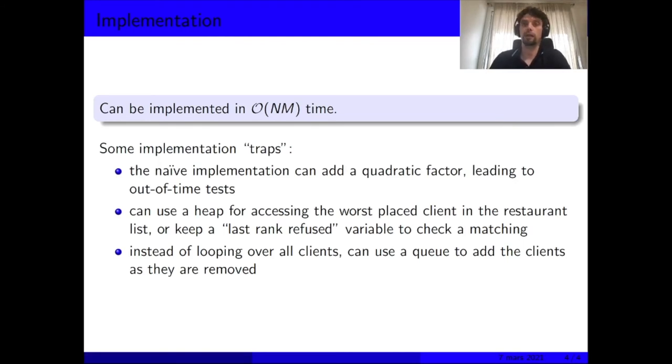This means that it can be implemented in linear time in the size of the preference lists, so O(NM) at most. However, there are some implementation traps that you should have taken care of. If you do it naively, you can add a quadratic factor to this, which would lead you to time limit exceeded errors.